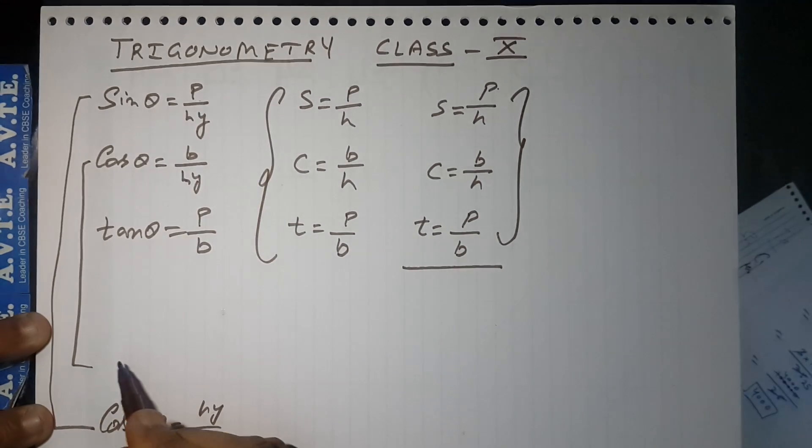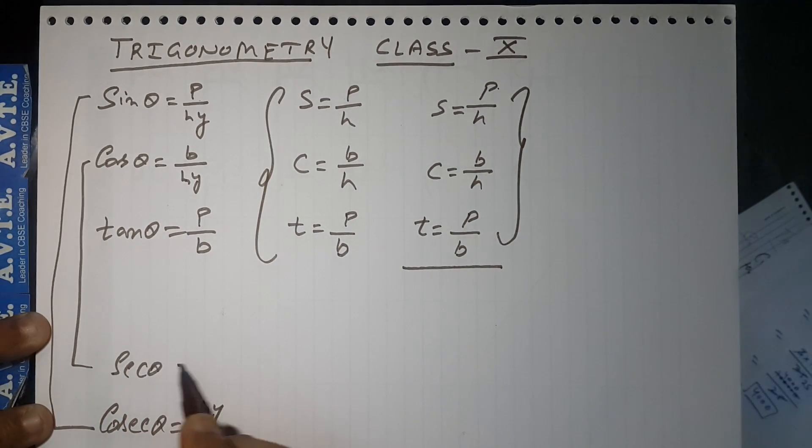Who is the reciprocal of cos? That is secant θ, which is hypotenuse upon base.